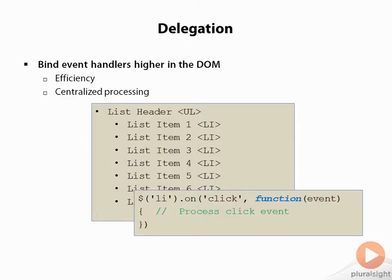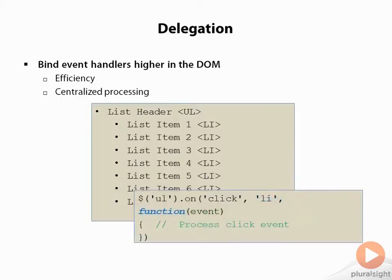To make use of event handlers on dynamically loaded content, we can use the on method with the optional selector parameter. This attaches a single event handler to the UL element, which is the parent of all the list items. When a click event occurs for any of the list items, it will bubble up to the UL element and be processed. This will work for dynamically loaded content as well as static elements.